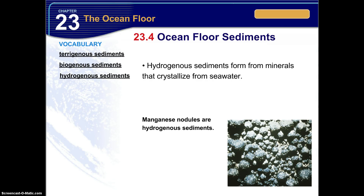Hydrogenous sediments form from minerals that are crystallized from seawater. One type is the manganese nodule, which is very important in supporting the idea that there was once a shallow sea on the surface of Mars — because manganese nodules have been found on the surface of Mars. Their nickname is 'blueberries,' so if you ever do research they might be referred to as blueberries as well.